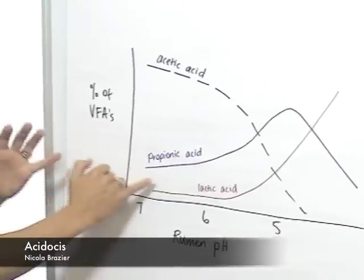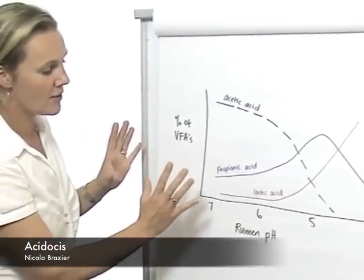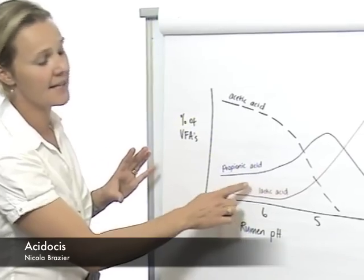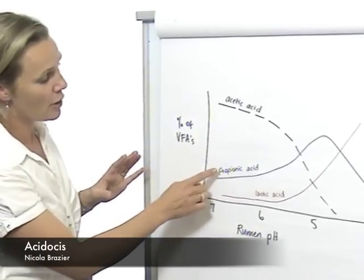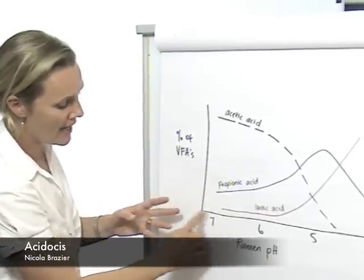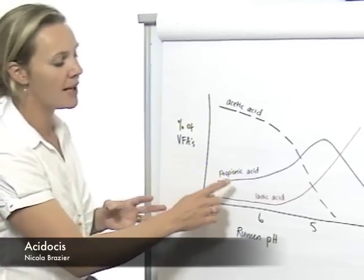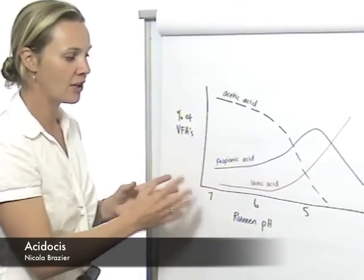Lactic acid is always produced within the rumen, but under normal rumen conditions, lactic acid is further fermented into propionic or acetic acids. At what we consider a normal rumen pH, at or above 6, between 6 and 7, lactic acid does not accumulate.